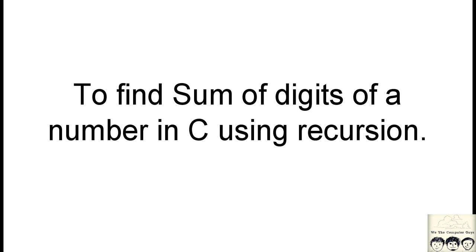Welcome back. Today's program will be looking to find the sum of digits using recursion in C. The sum of digits means if you have a number like 1 2 3, the sum of its individual digits is 6. We have to find this using recursion.